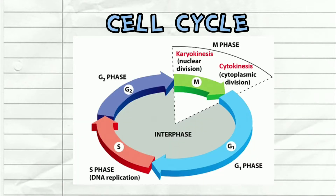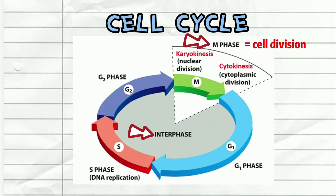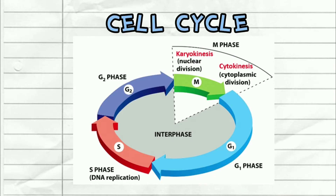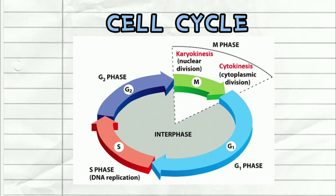Before we get into mitosis, you first need to know the cell cycle, which is divided into interphase and M phase. M phase is technically the cell division phase, whereby karyokinesis and cytokinesis take place. However, before M phase — before cell division can take place — something called interphase has to occur first. Interphase is the preparation phase prior to M phase, which the cell must go through before cell division can actually occur.